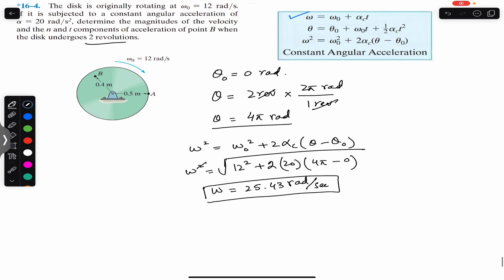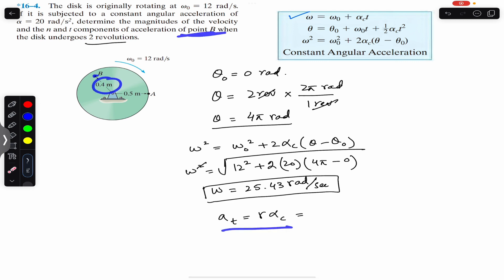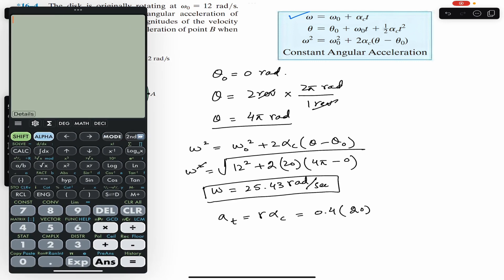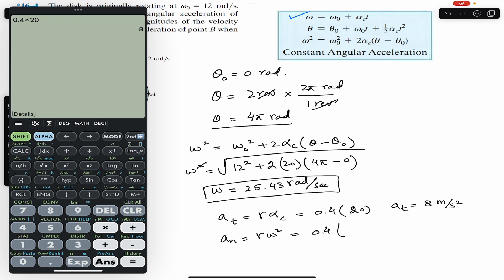Now we can find the tangential acceleration for point B. For point B the radius is 0.4 meters, so a_t equals r times alpha equals 0.4 into 20, which gives us 8 meter per second square. Similarly, the normal acceleration equals r times omega squared: r is 0.4 for point B and omega is 25.43, so 0.4 into 25.43 squared gives the normal component of acceleration equal to 258.67 meter per second square.